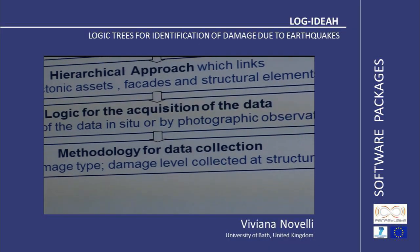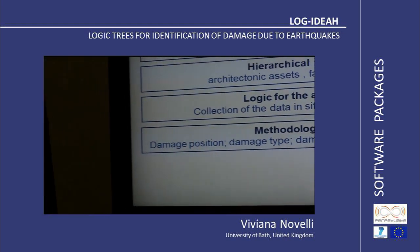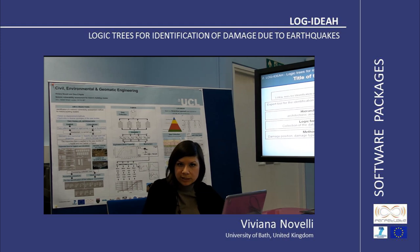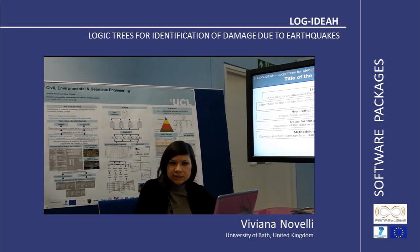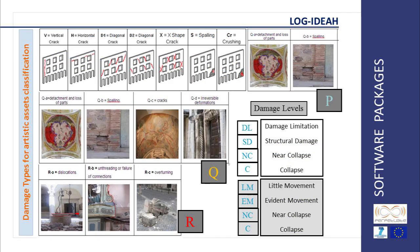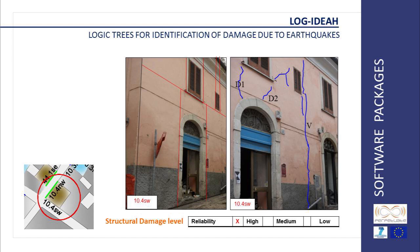In order to collect data in Log Idea, data can be collected on site or by pictures. The information required to complete the record is related to damage type, damage position, and damage level, and needs to be collected at the level of structural elements. Different types of damage types and damage levels have been defined at the structural element level, as well as different types of damage that can be collected on artistic assets. Once architectonic assets are identified at the urban scale, the building is deconstructed into different façades, and then identification of structural elements is carried out, making it possible to assess the type of damage.